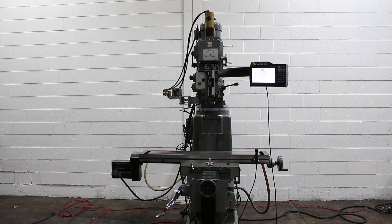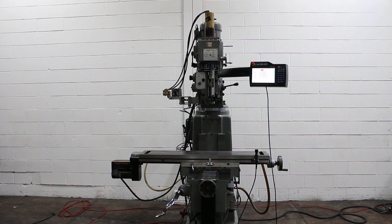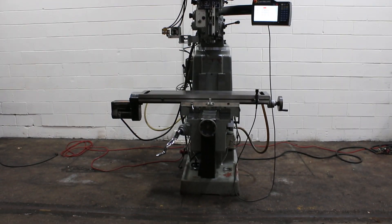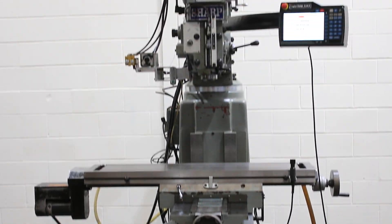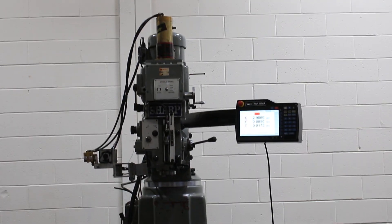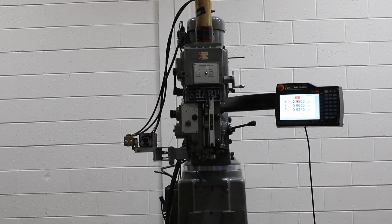Today we have a Sharp TMV1 CNC vertical milling machine with a Prototrack KMX two-axis control. The control was new in 2016. The mill was new in 2008.